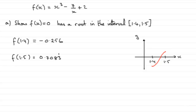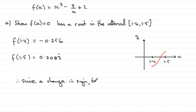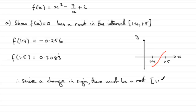So what we need to say is: since there is a change in sign, there must be a root in the interval 1.4 to 1.5.